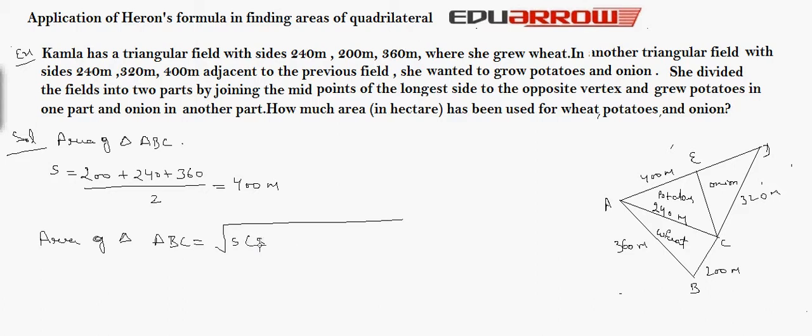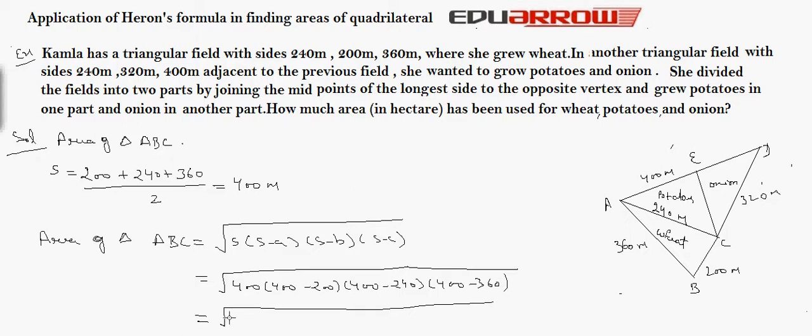Now area of triangle ABC is given by square root of S into S minus A into S minus B into S minus C. That is equal to square root of 400, 400 minus 200, 400 minus 240, 400 minus 360. Now it is equal to square root of 400 into 200 into 160 into 40 meter square.